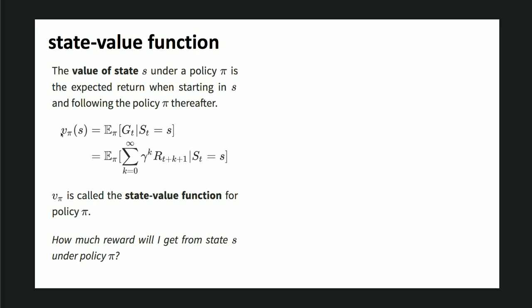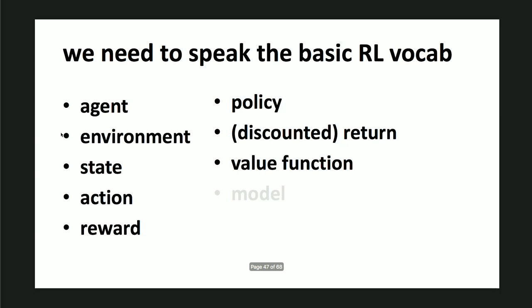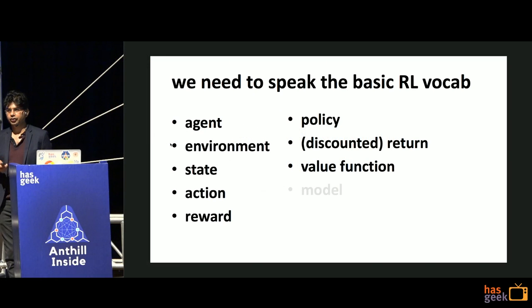The value function is: how much reward will I get from state s under policy π? There is also an action value function which we'll skip. So to summarize: goal leads to reward, which leads to return (cumulative discounted reward), which leads to value function (expected discounted return), and an RL agent will try to maximize that. Policy is how to take actions, return is cumulative discounted reward, value function is the expected discounted return.